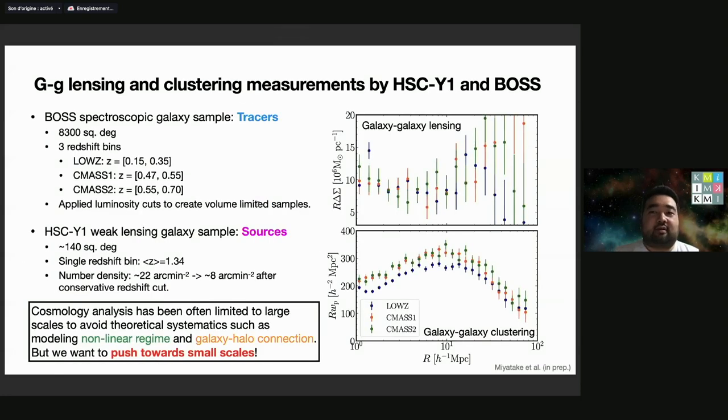KIDS and DES already got results out, and we are getting out our first results from HSC. This is a measurement we did. We used the BOSS spectroscopic galaxy sample as tracers. We divided that into three redshift bins and applied conservative luminosity cuts to create a volume-limited sample.